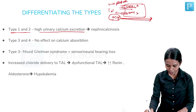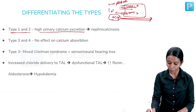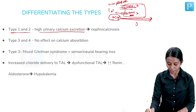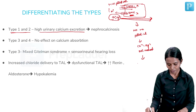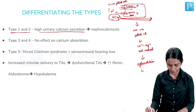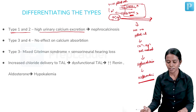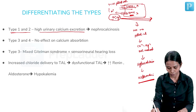When NKCC2 is blocked (type 1) or ROMK is blocked (type 2), potassium does not create a positive luminal potential, so calcium and magnesium are not reabsorbed. This leads to hypercalciuria and nephrocalcinosis. This mechanism explains why only types 1 and 2 have nephrocalcinosis.